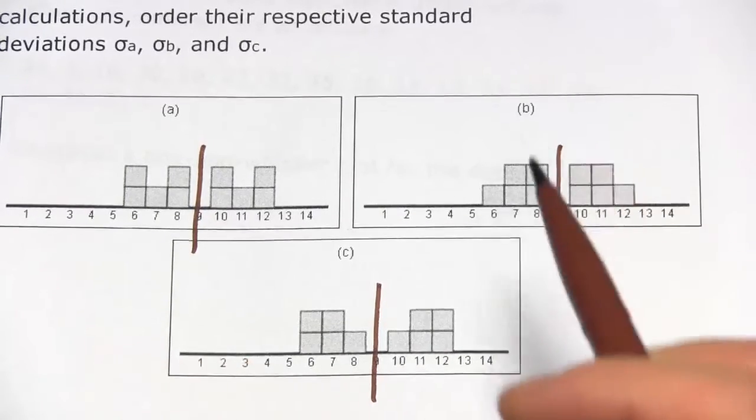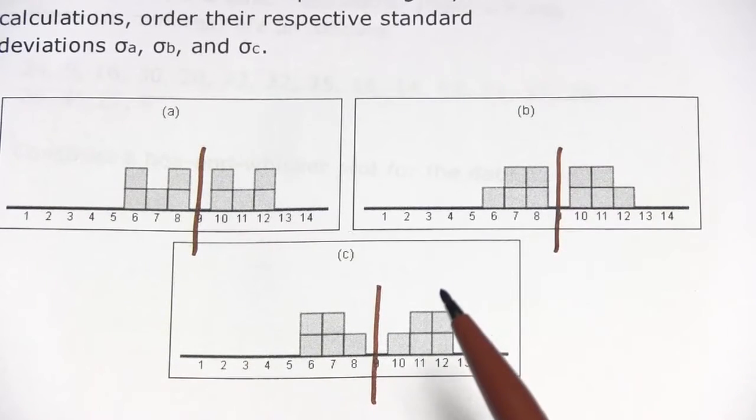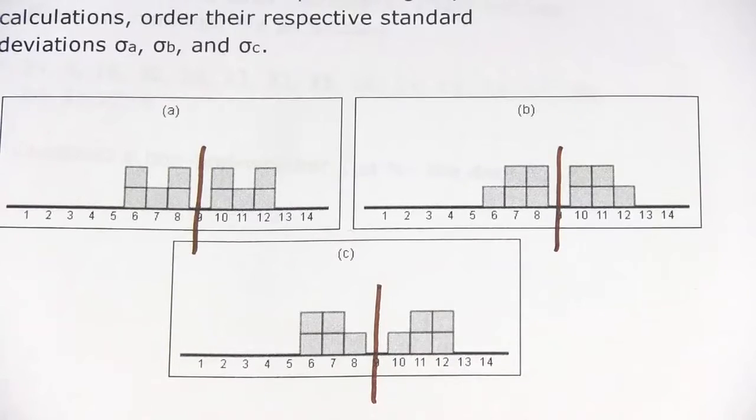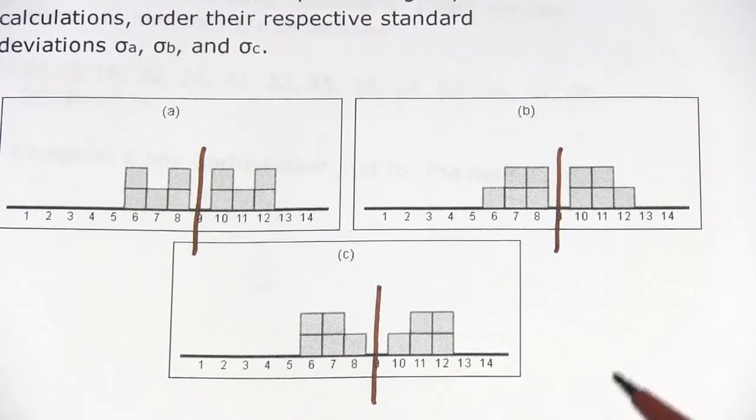So the more bunched in around the mean something is, the smaller the standard deviation is going to be. The more spread out they are, the larger the standard deviation is going to be for that distribution.